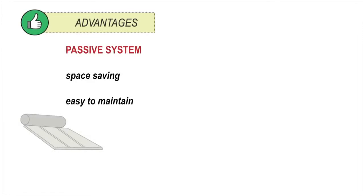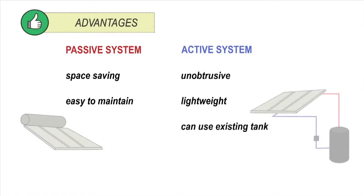Each type of system has advantages. A passive system is space-saving and is easy to maintain with no moving parts. An active system is unobtrusive, lightweight, can use an existing tank and the tank can be located closer to where hot water is used, reducing heating loss in pipes. But the pump uses some energy.